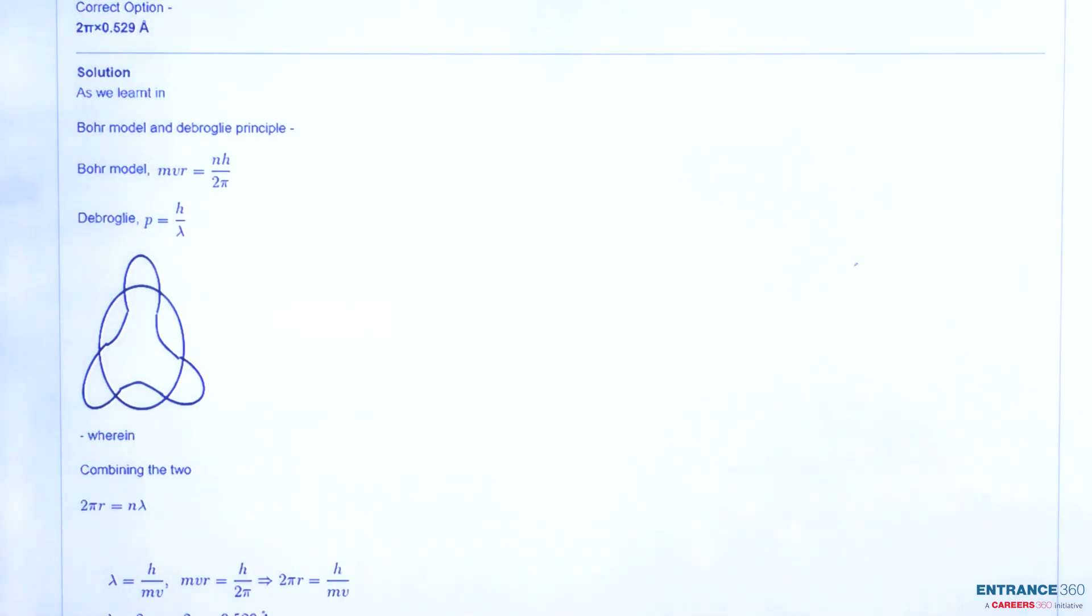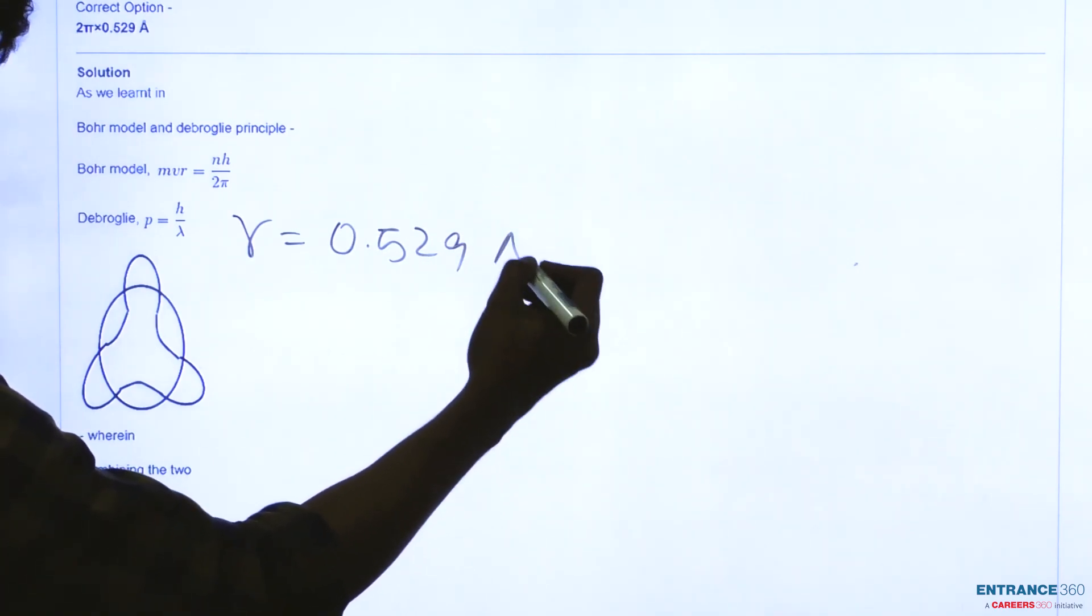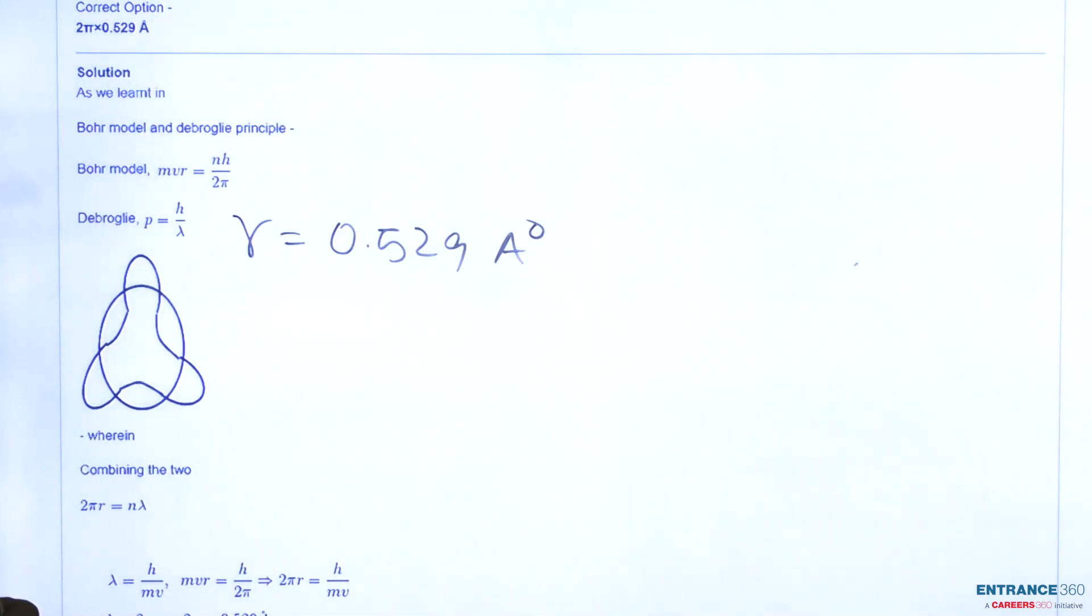Also we know that in Bohr model radius is given as 0.529 for hydrogen atom. So this is the value of Bohr's radius for the hydrogen atom.